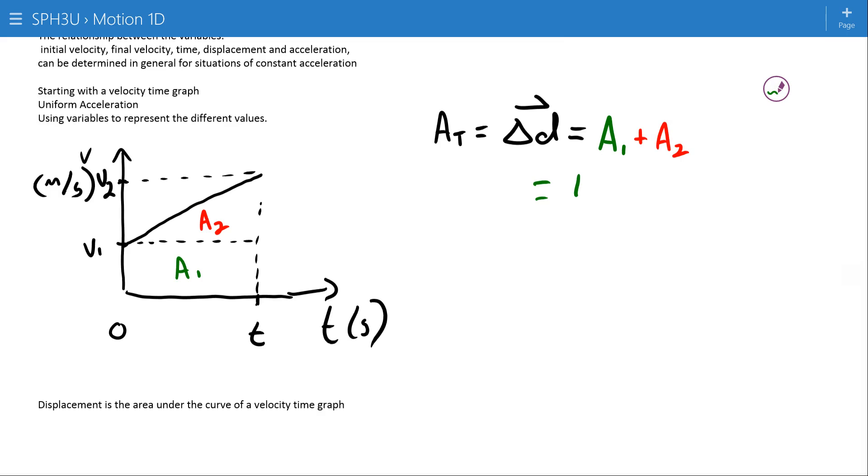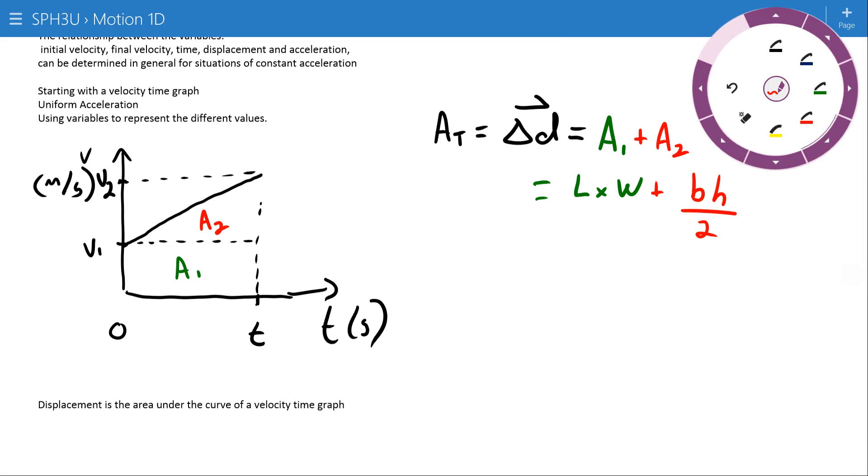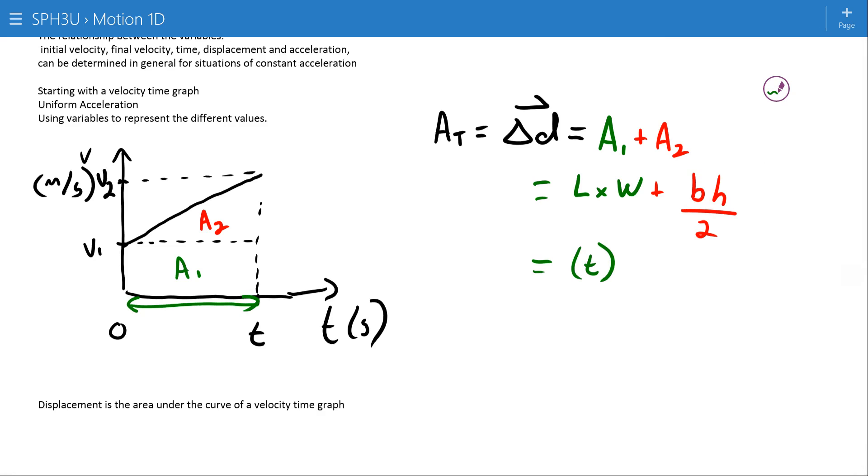I'll call this a1 and this a2. And then I'll recognize the total area, which is equal to the displacement, is equal to the sum of a1 plus the sum of a2. A1 is a rectangle, length times width. And a2 is a triangle, base times height divided by two. The rectangle has a length of t and a width of v1. Our triangle has a base of time and a height which is a little harder to see. We can see that the top value is v2, so if we only want from here to here, then we have to subtract away v1. So it is v2 minus v1, and that's all divided by 2.